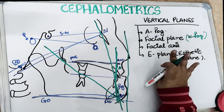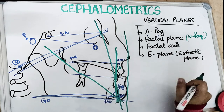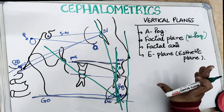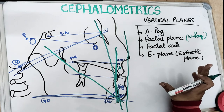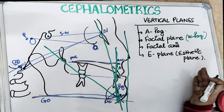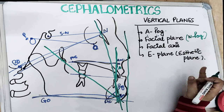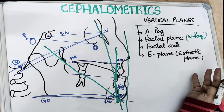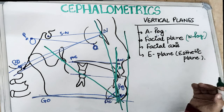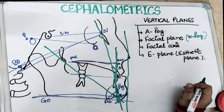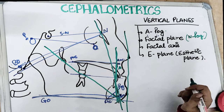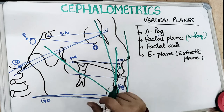So we have studied four vertical planes and seven horizontal planes, which finishes our coverage of planes and lines in cephalometrics. In the next video we will be studying Downs analysis, and one by one we will finish all three analyses: Downs, Steiner's, and Tweed's. I hope that helped you understand and learn the topic. If you have any questions, leave them in the comments below. If you enjoyed the video, like it, share it, subscribe, and I'll see you soon.